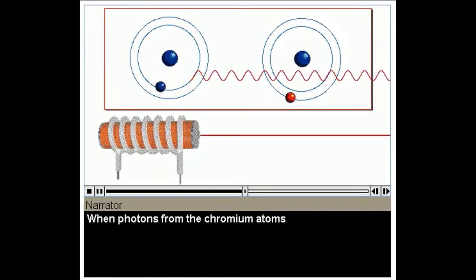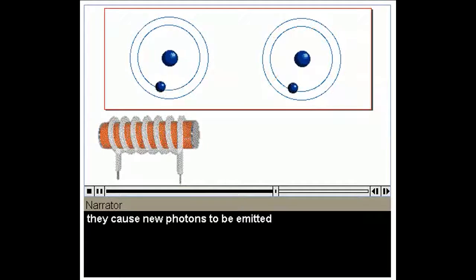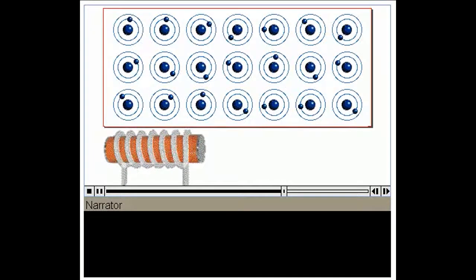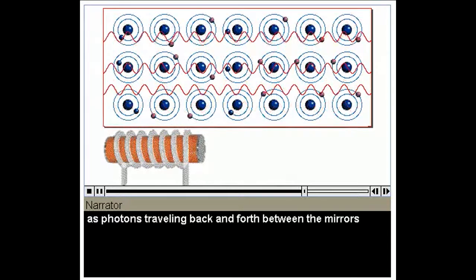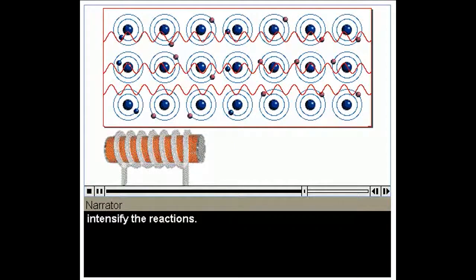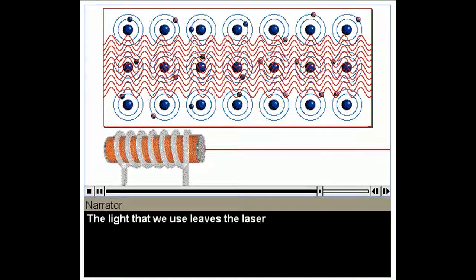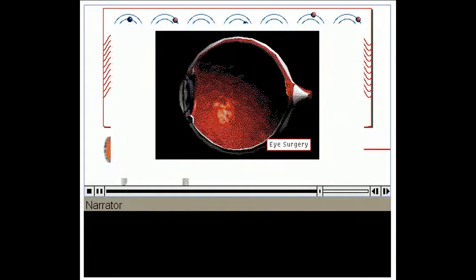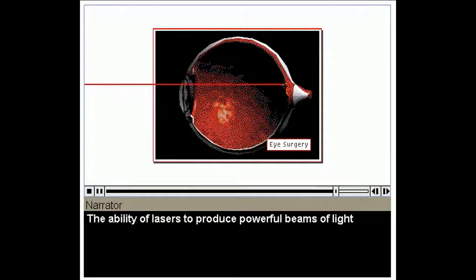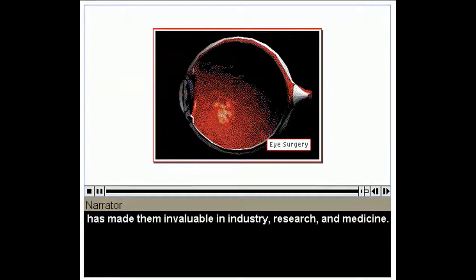When photons from the chromium atoms strike other excited atoms, they cause new photons to be emitted that are identical to the first. The laser light is amplified as photons traveling back and forth between the mirrors intensify the reactions. The light that we use leaves the laser through the partially silvered mirror. The ability of lasers to produce powerful beams of light has made them invaluable in industry, research, and medicine.